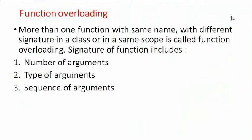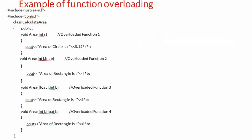Function overloading means having more than one function with the same name but different signatures in a class or in the same scope. The signature of a function includes the number of arguments, types of arguments, and sequence of arguments.